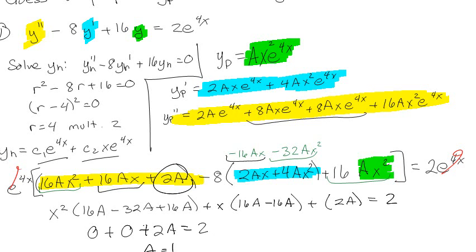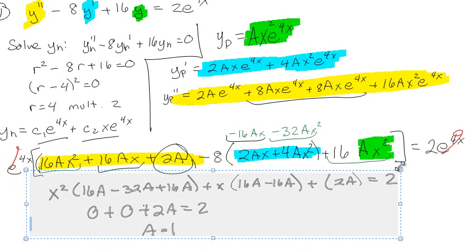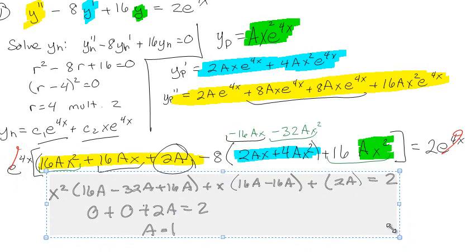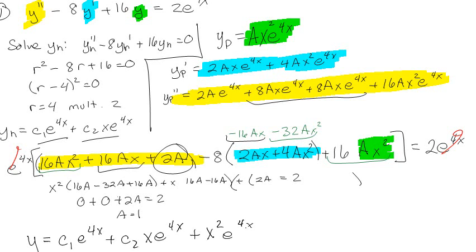So a equals 1, and my final solution is c₁e^(4x) plus c₂xe^(4x) plus x²e^(4x). With a equal to 1, the particular solution is x²e^(4x), and any initial conditions I have I would apply directly to that. Let's do the next one.